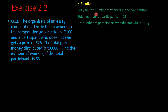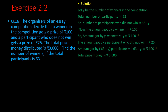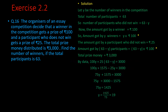Solution: Let the number of winners be y. Total number of participants = 63. So the number of participants who did not win = 63 − y. The amount given to y winners = 100y. The amount given to participants who did not win = 25 × (63 − y). Adding both amounts gives rupees 3000. So by the given information: 100y + 25(63 − y) = 3000.